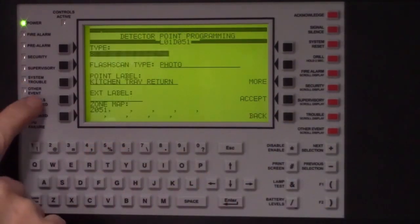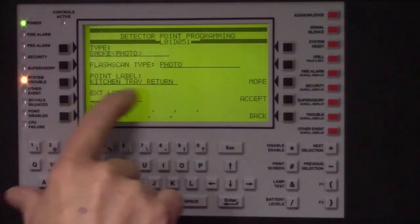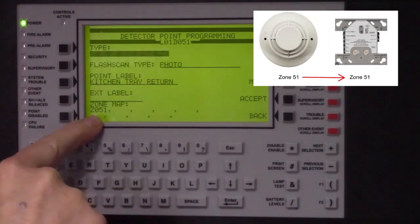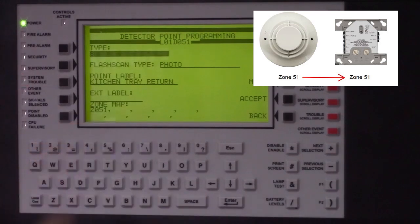Edit loop 1 detector 51. When using the auto program, it will clear out the device label, so it will need to be re-entered. It will also clear the zone map assignment, which is what links the input device to the appropriate output responses.